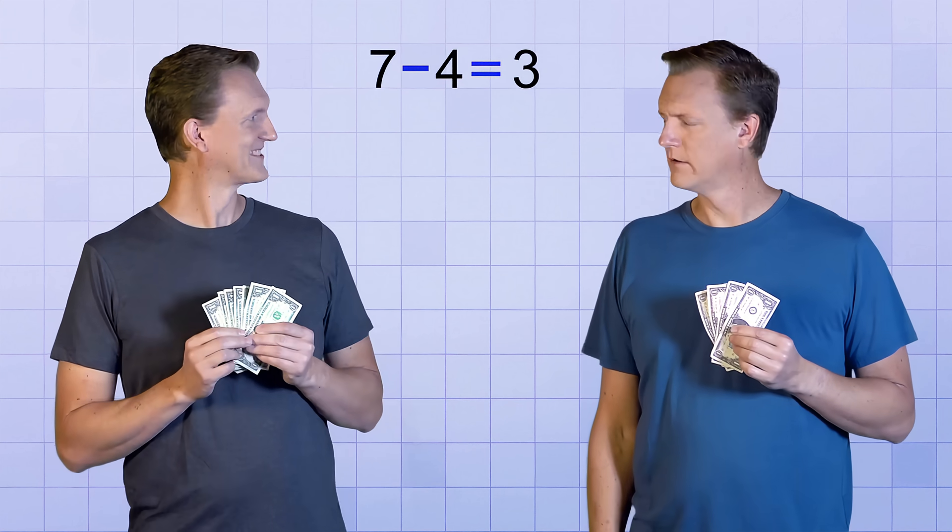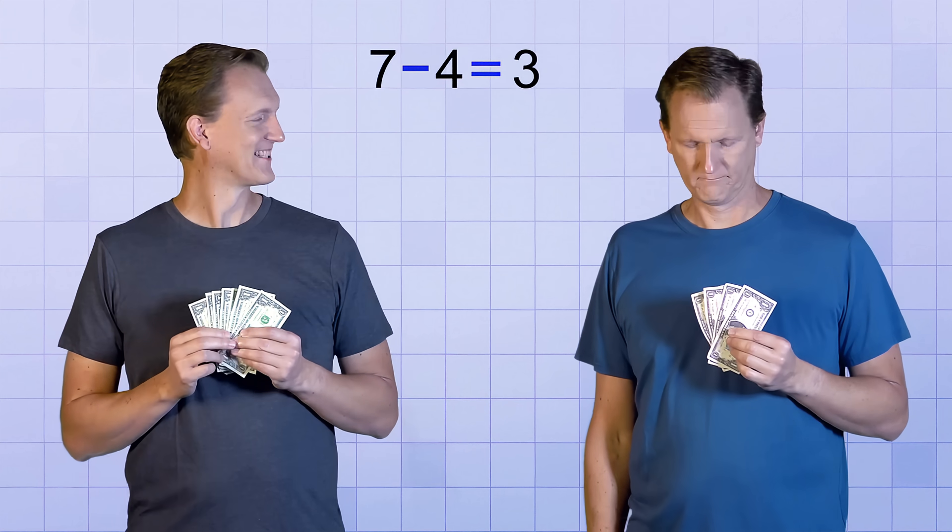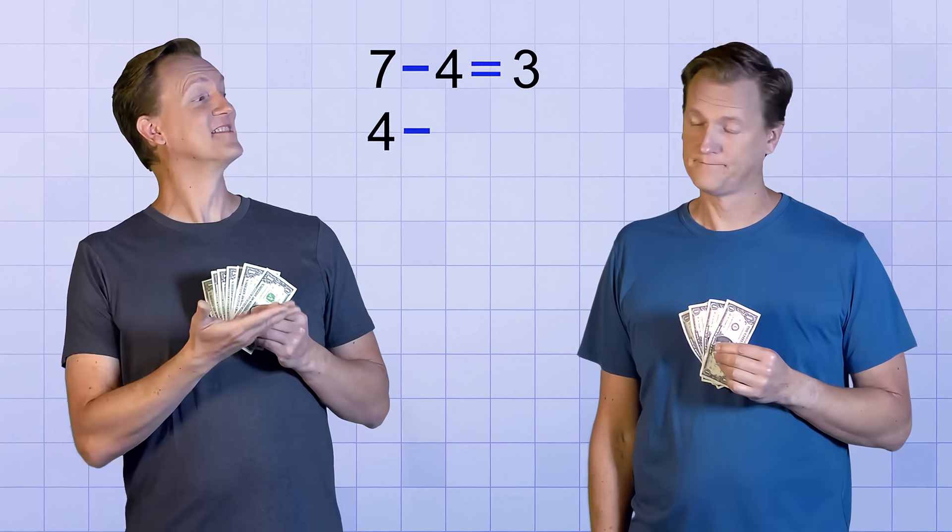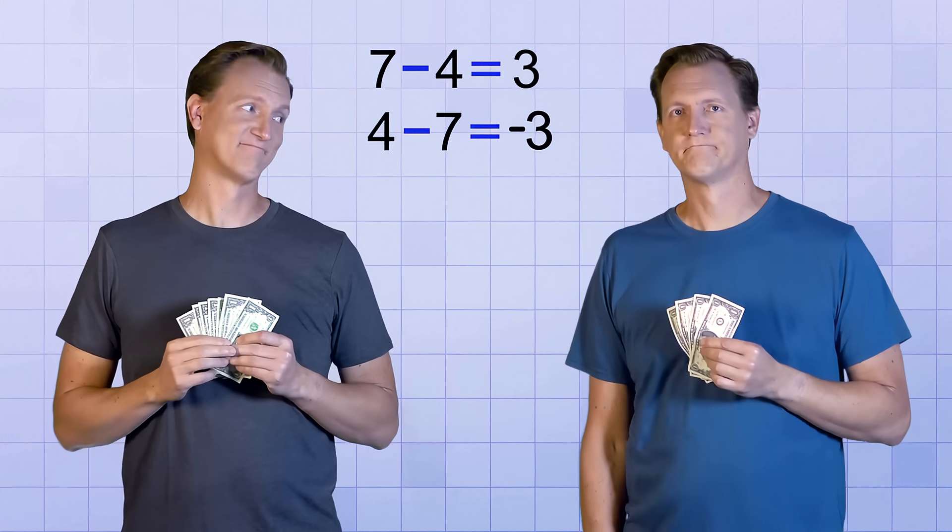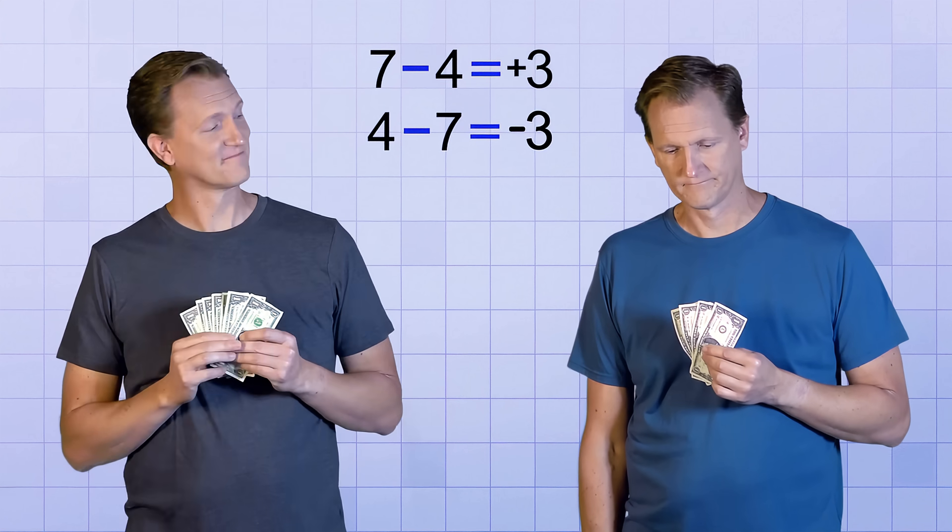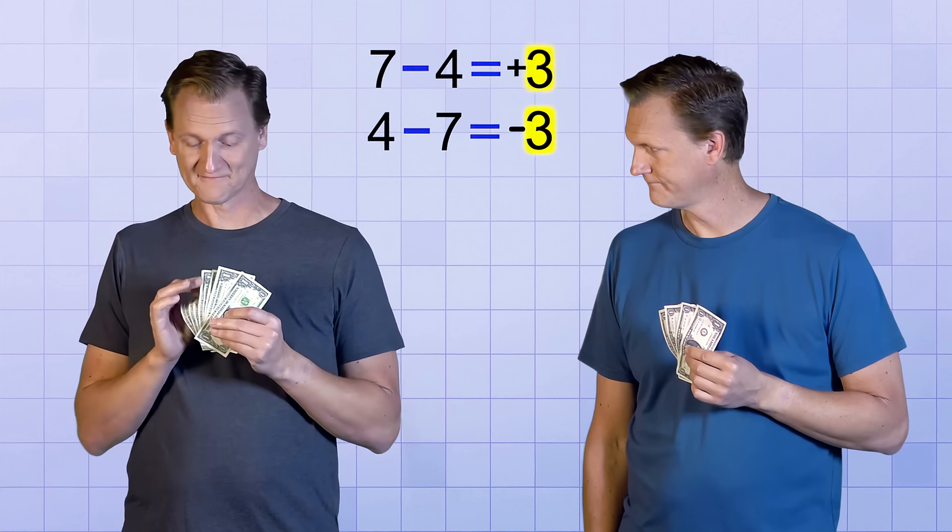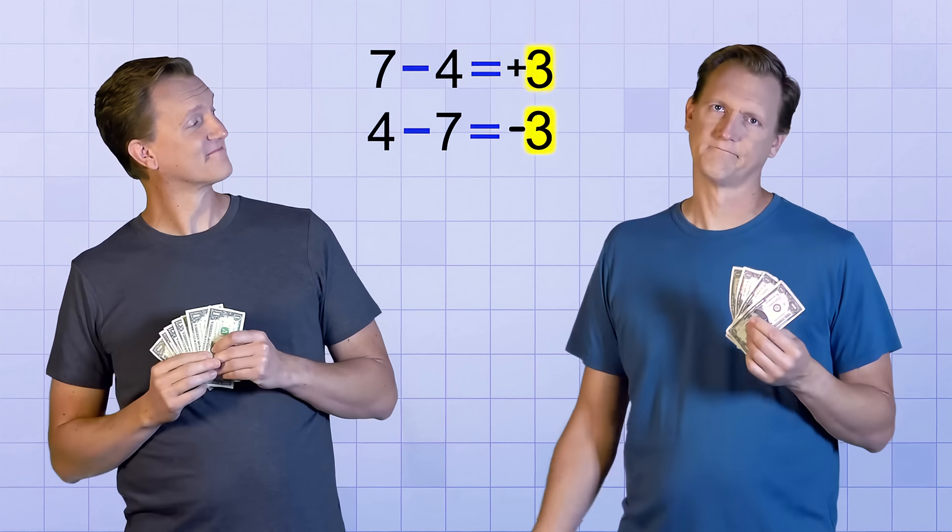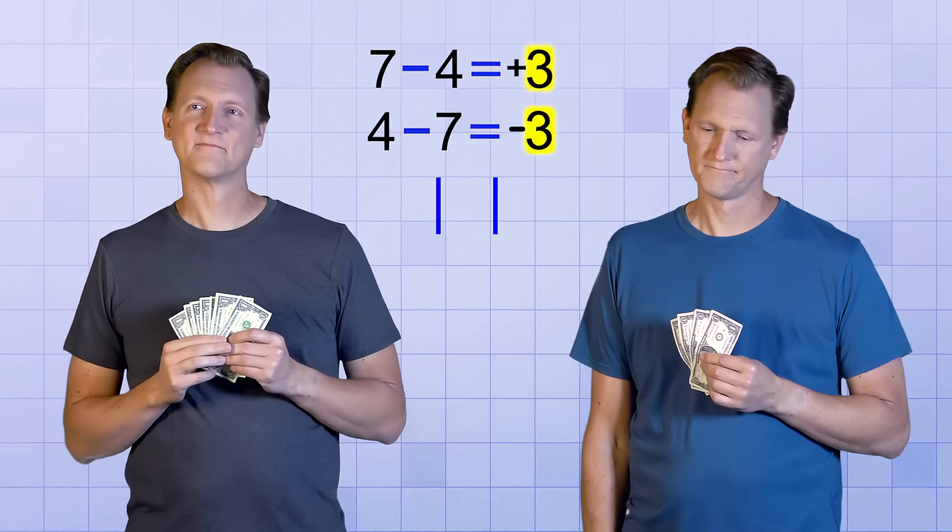And the answer you get from subtracting depends on the order of the numbers because subtracting doesn't have the commutative property, right? If we subtract the amounts in this order, 7 minus 4 will get the answer 3. But if we subtract the amounts in this order, 4 minus 7 will get the answer negative 3. Do you notice something about these answers? Yep, even though the sign is different, the magnitudes are the same. That means that the absolute values of the answers would be the same.